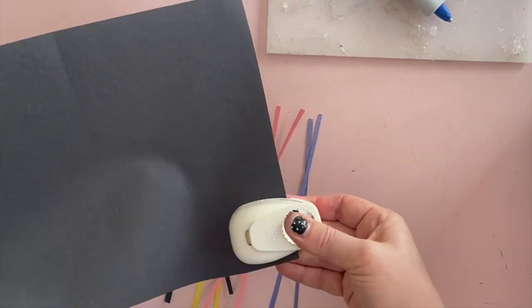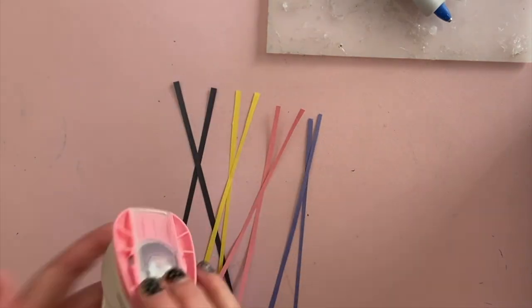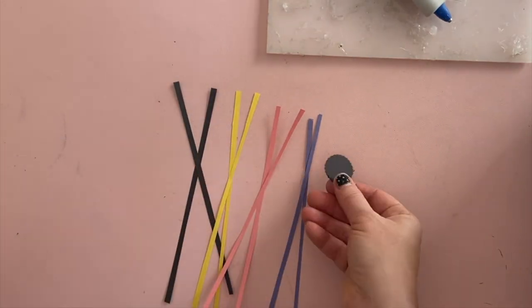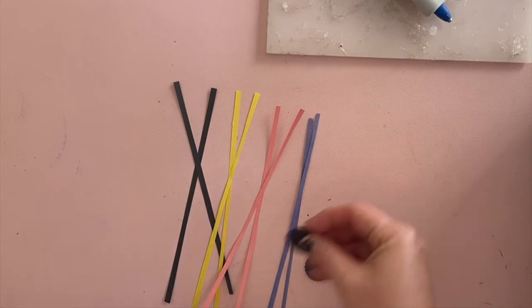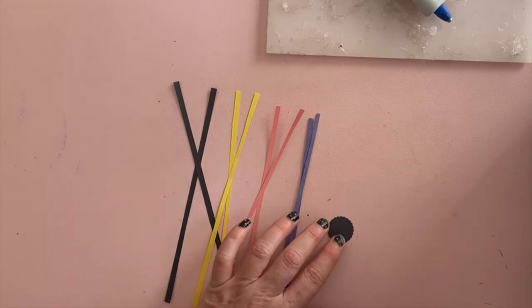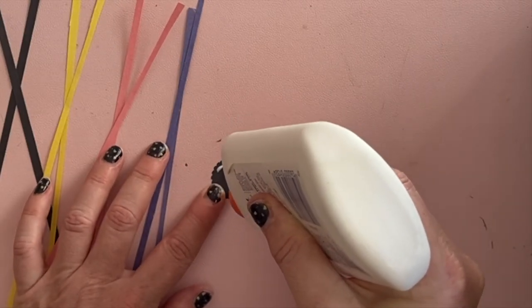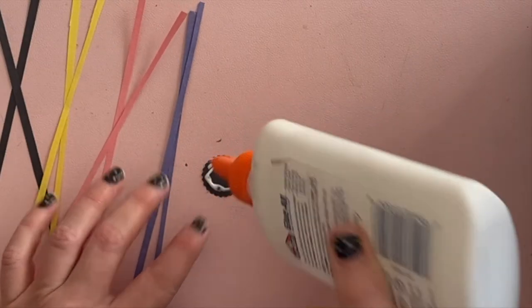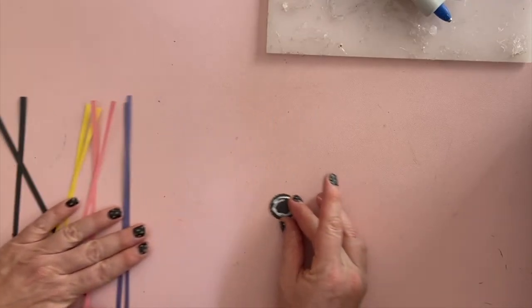Next, we're going to punch four circles out of any color paper that you want. You could also draw the circles and cut them out. We're going to start with just one of them. Get your squeezy glue and add a circle of glue onto this circle. We're going to glue the strips onto this circle, just like this.